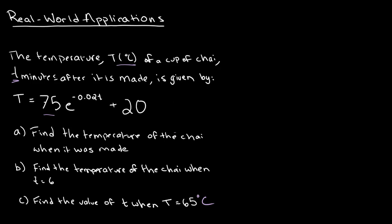So let's just go over what this question is saying. Here, we're given an equation relating the time that has passed to the temperature of the chai. So we see that e to the power of negative 0.02 times T multiplied by 75 plus 20 gives us the temperature of the chai.